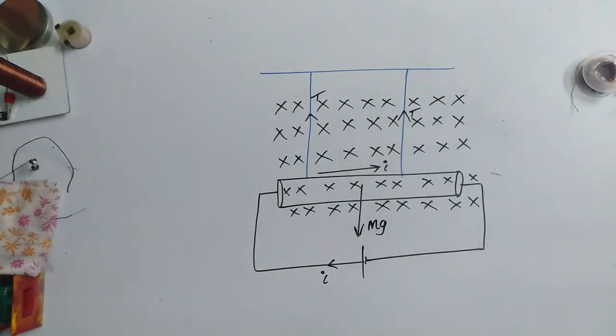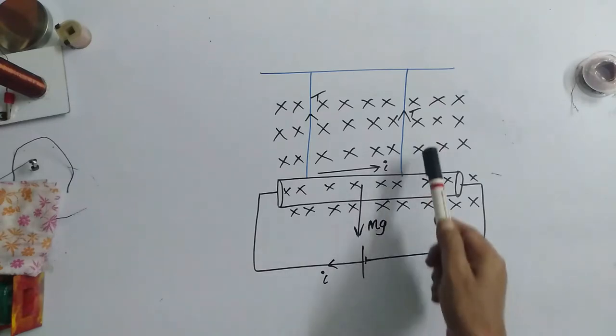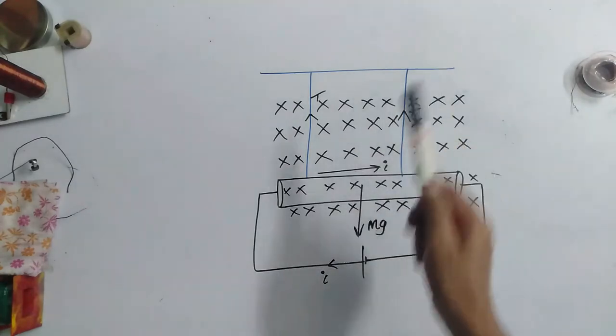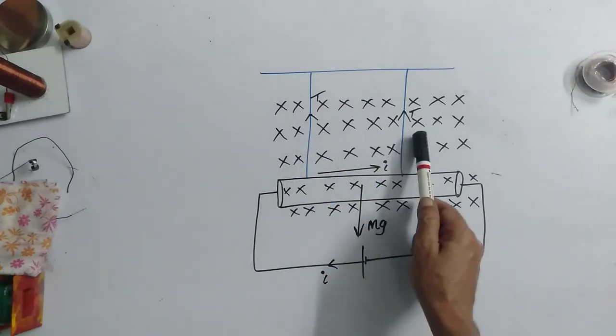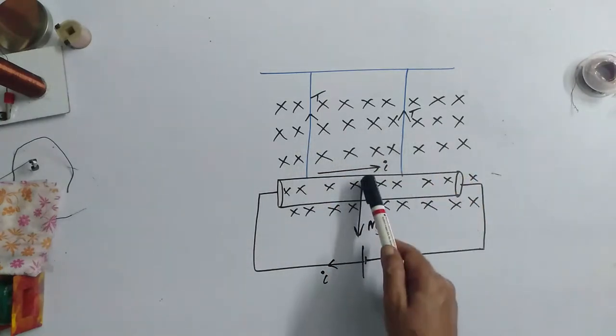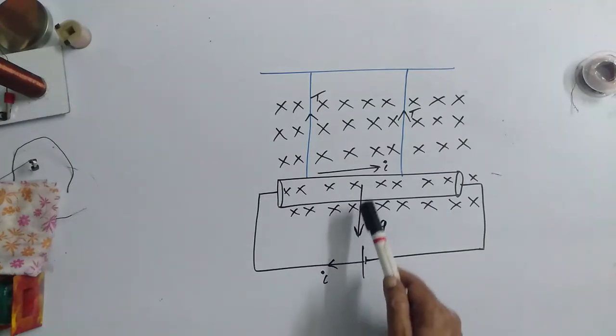Tension always pulls. Tension cannot push. So, T and T I took in the upward direction. Because of gravitational force, weight is always in the downward direction.